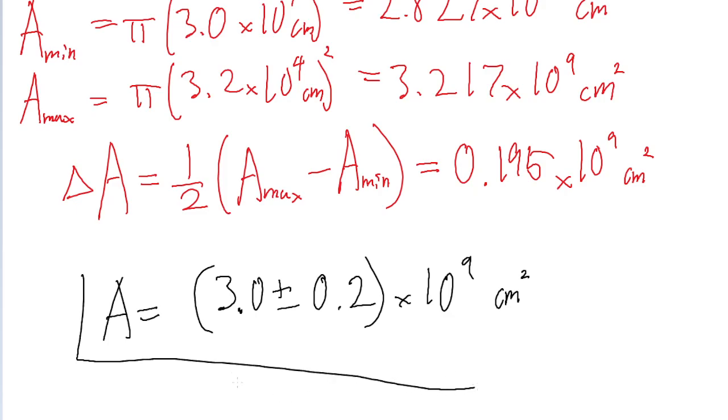And so this is our area of the circle, including its uncertainty. And that is it for this problem.